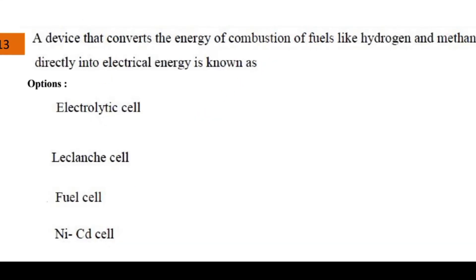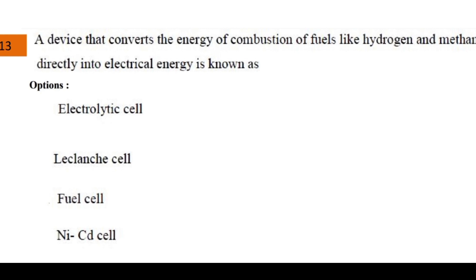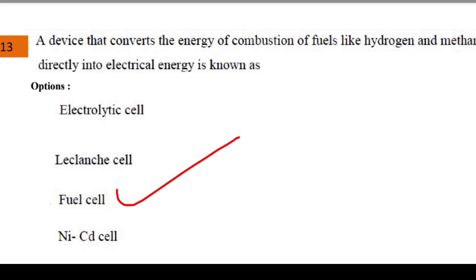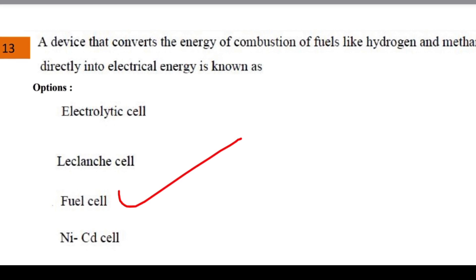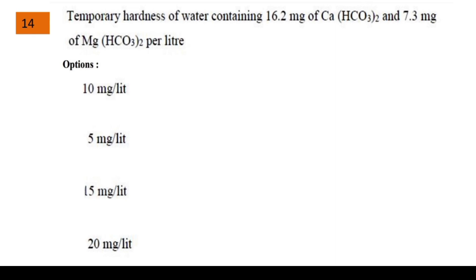Next question: a device that converts the energy of combustion of fuels like hydrogen and methane directly into electrical energy is known as? The options were electrolytic cell, Leclanché cell, fuel cell, and nickel-cadmium cell. The answer is fuel cell. Fuel cells convert combustion energy of fuel into electrical energy, and can be used in rocket propulsion; the byproduct water can be used for drinking purposes.